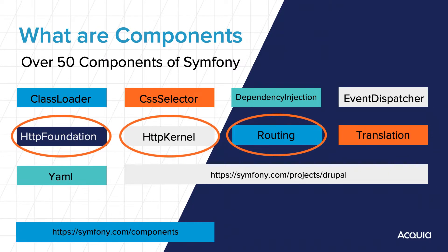The HTTP Foundation component defines an object-oriented layer for the HTTP specification. The HTTP Kernel component provides the building blocks to create flexible and fast HTTP-based frameworks. It's the HTTP Kernel that Drupal expands upon to build the Drupal Kernel, which we will learn about later. The Routing component maps an HTTP request to a set of configuration variables. We'll also learn about routing in detail later on in this course. For now, let's briefly examine these three components and understand why they matter.